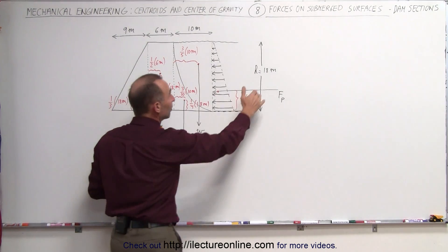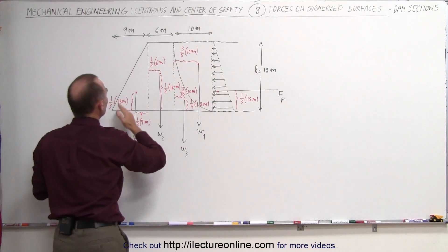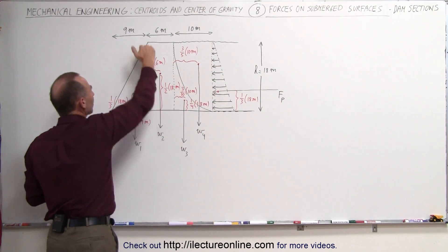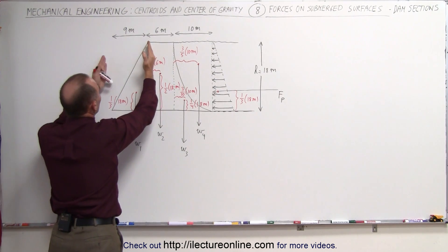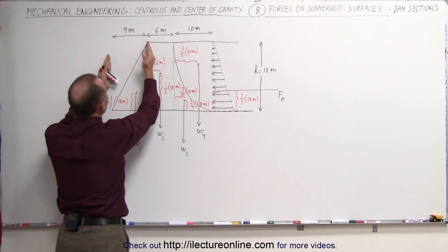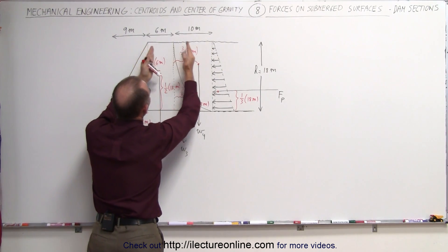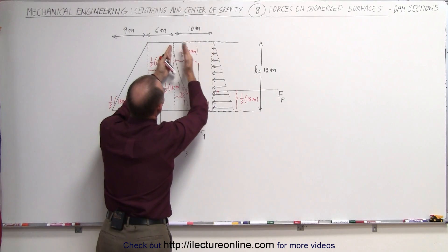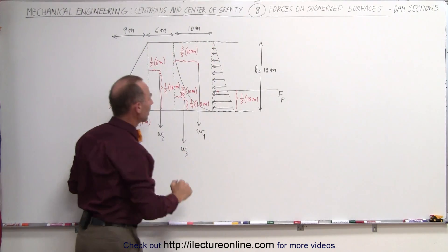Assuming that the water has a depth of 18 meters, the height of the dam is also 18 meters. This section here is 9 meters wide, this section is 6 meters wide, and this section from there to there is 10 meters wide.